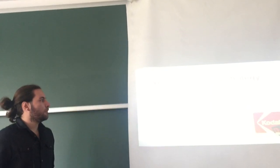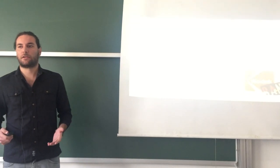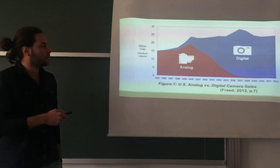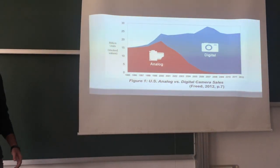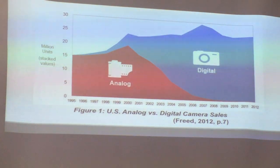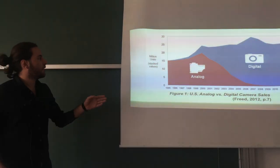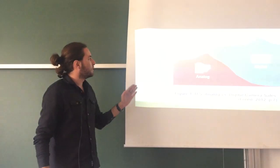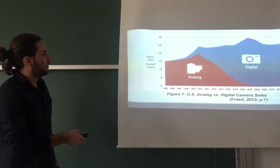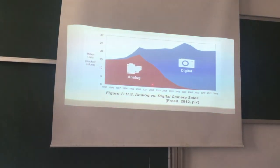At the end, Kodak failed to adopt the new marketplace and they went bankrupt. We can clearly see the sharp decline of Kodak in the market through a graph of digital versus analog camera sales in the US. This graph was cited from Josh's article published in 2012. The x-axis shows the years, and the y-axis shows the total amount of sales in million units. We can easily see the sharp decline of analog camera sales after 2000, whereas digital camera sales started to increase.